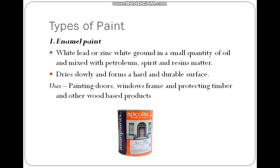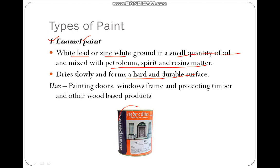Now let us discuss about the types of paints. First is enamel paint. White lead or zinc white is ground in a small quantity of oil, mixed with petroleum, spread and resin material — these are all called enamel paint. It dries slowly and forms a hard and durable surface. You can see these types of enamel paints in Asian paints. It is used for painting doors, window frames, protecting timber, and other wood-based products.